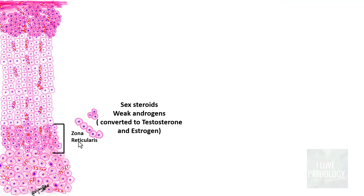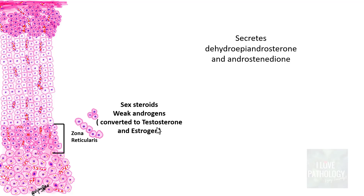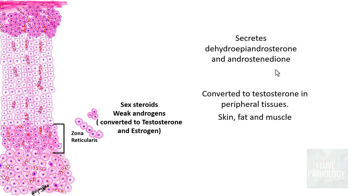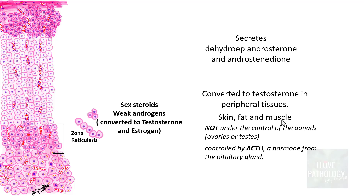The cells of zona reticularis secrete sex steroids, which are basically weak androgens later converted to testosterone and estrogen. These weak androgens are dehydroepiandrosterone and androstenedione, and they are converted into testosterone in the peripheral tissues — meaning in the skin, fat, and muscle tissue. Importantly, this conversion is not under the control of gonads — whether ovaries in females or testes in males — but is instead controlled by adrenocorticotrophic hormone from the pituitary gland.